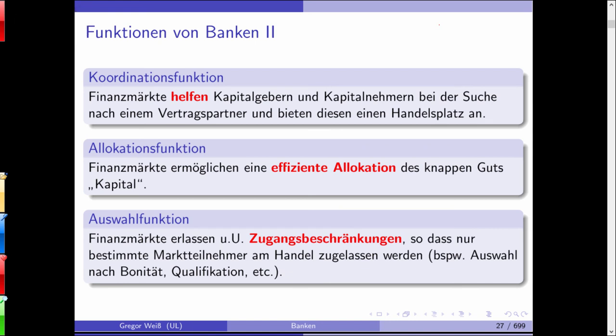What is the coordinating function of a financial market? Financial markets help investors in their search for a contract partner. My starting point: I need 100,000 euros. I could ask each one of you and you might say you can give me five euros or 500 euros — this would be a lot of work for me. It would be much easier if you all went to a financial intermediary, gave your money to the bank, and I simply went to the bank and asked for a loan.